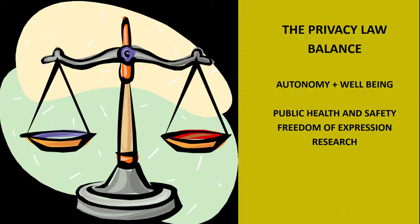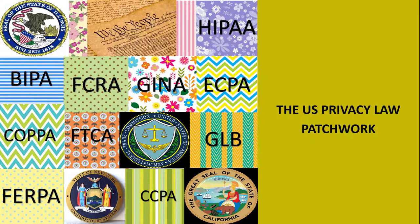American law tries to strike the right balance through a patchwork of laws at the federal, state, and even local levels. The US is a federalist system, which means that both the federal and state governments have their own law-making powers. Congress has the power to pass laws regulating interstate and international commerce, while states and their political subdivisions have the power to regulate local affairs. All levels of government have been active when it comes to privacy law.